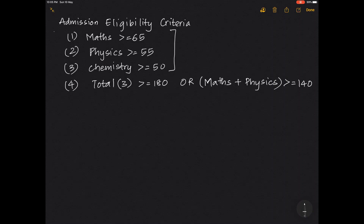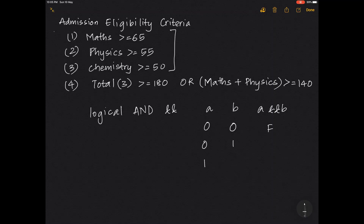The logical AND is represented by two ampersand signs (&&). If we have variables a and b, the result of a AND b is false if both variables are zero (false), and also false if any one of the variables is false. The result is true only when both values are true (1).